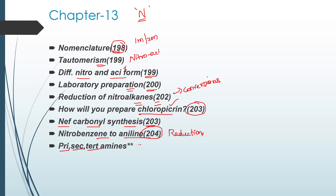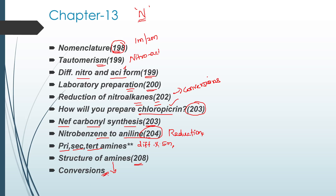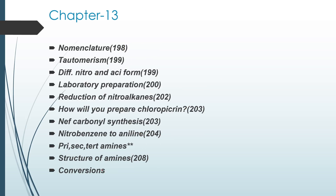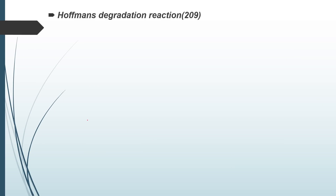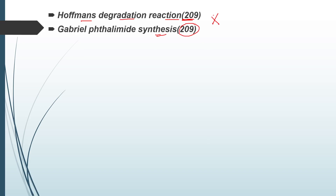Next, the difference between primary, secondary, and tertiary amines — very important, theory-based 5-mark question. Structure of amine, page 208. Naming reactions: Hofmann's degradation reaction, page 209. Gabriel phthalimide synthesis, page 209. Hofmann ammonolysis, page 209 — naming reactions are very important in this chapter.